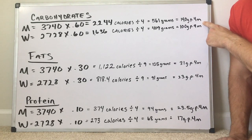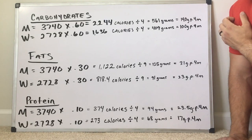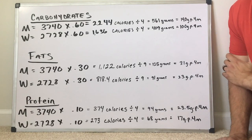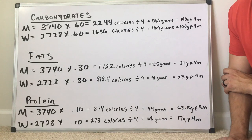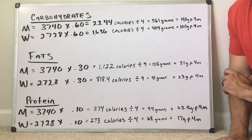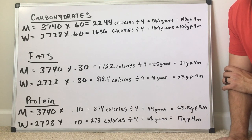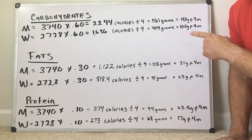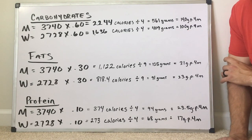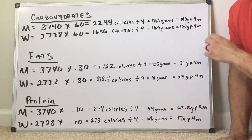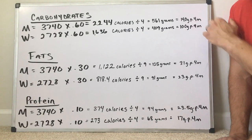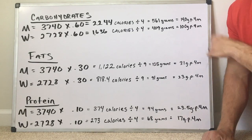So 60% of our daily recommended intake should be carbohydrates, which is 561 grams. If you eat 4 meals, that's 140 grams of carbohydrates per meal — aiming for about 100 grams of complex carbs and about 40 grams of simple carbs. For women, 2,728 times 0.60 is 1,636 calories from carbohydrates. Dividing by 4 gives 409 grams of carbohydrates per day, or about 100 grams per meal across 4 meals.